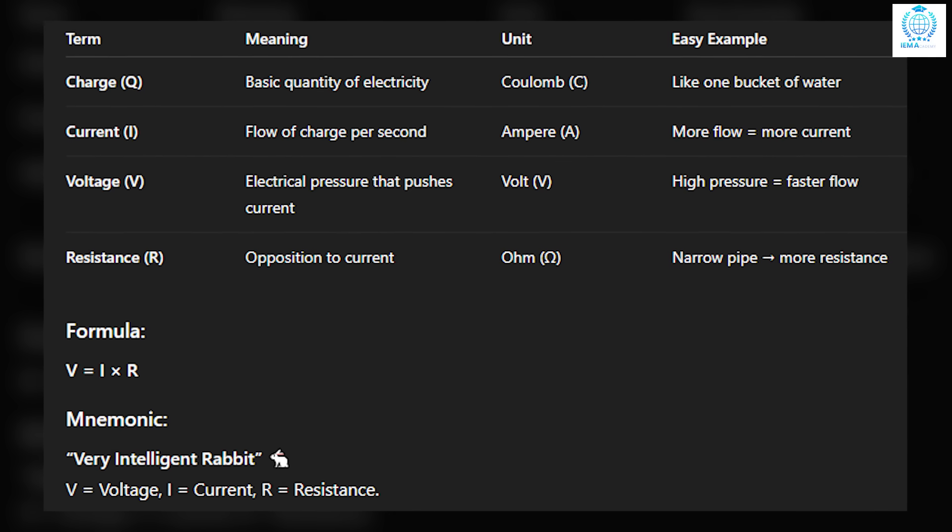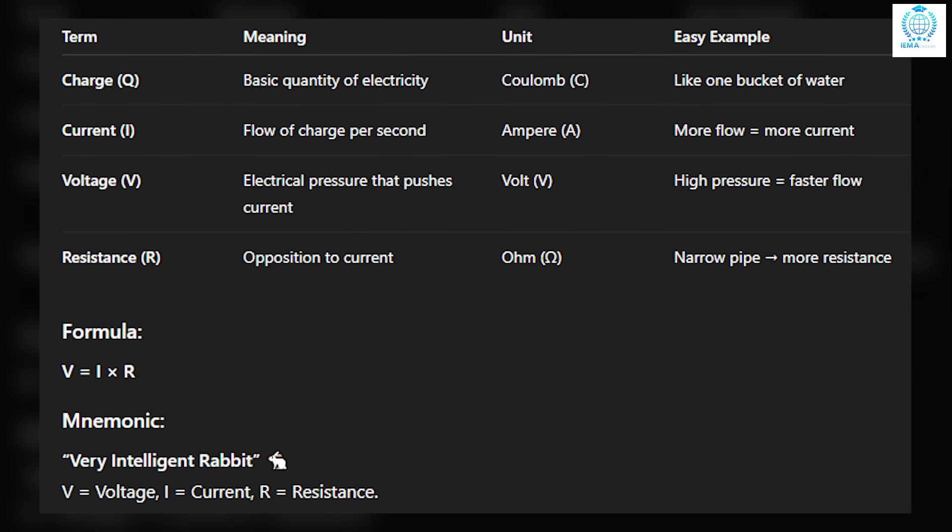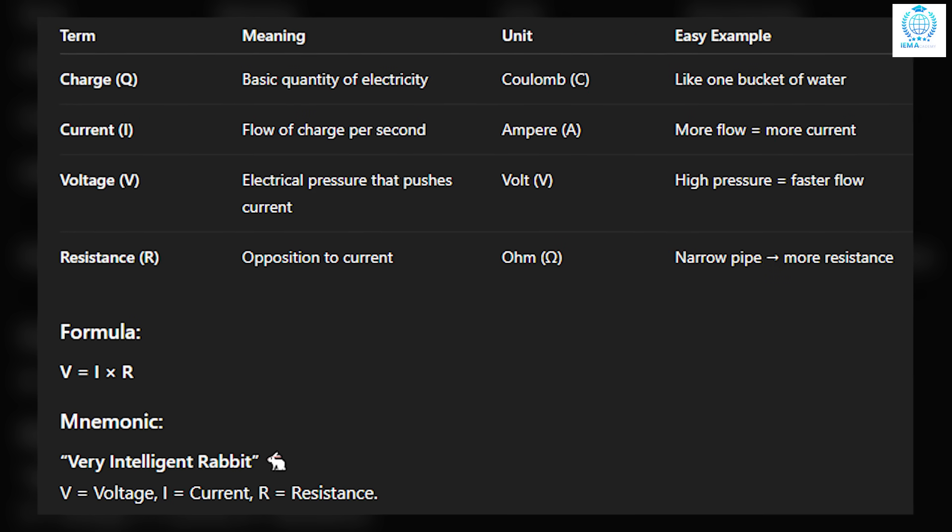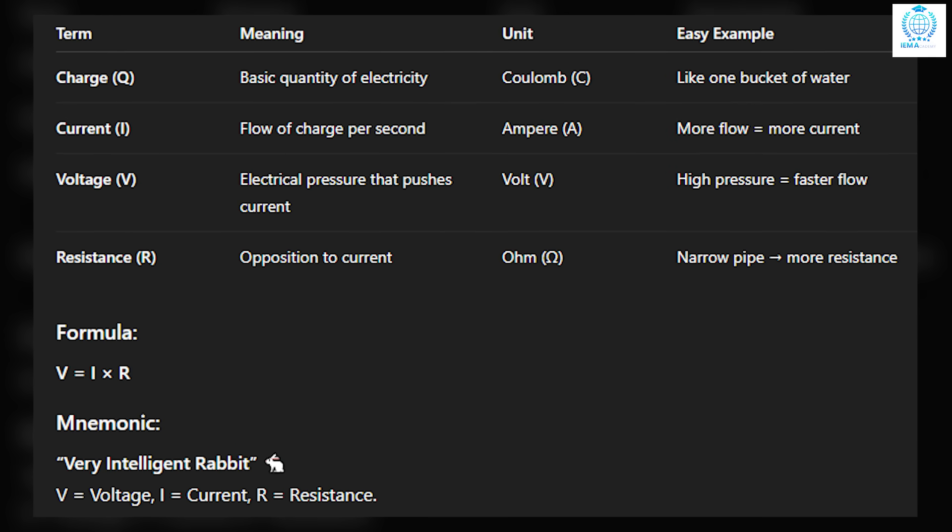The key formula to remember is V equals I into R. And the mnemonic is very intelligent rabbit. V for voltage, I for current, and R for resistance. Point number three, ohm's law.